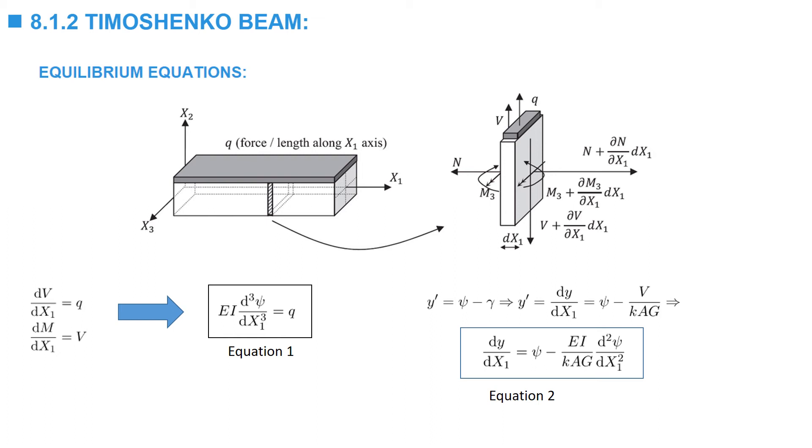The equilibrium equation gives the first equation that is needed to be solved to find the displacements of the beam. Here, the equilibrium equation is EI, the third derivative of psi with respect to x1 cubed, is equal to Q. Remember, for the Euler-Bernoulli beam, this was the fourth derivative of Y. But here, this is the third derivative of the cross-sectional rotation.